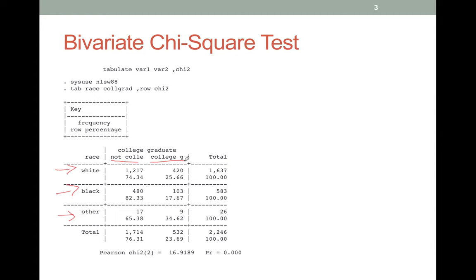What do you do to make this work? All you do is you make sure you have a comma chi2 at the end of your tab command, so it's not even a separate command, it's just an option on the tabulate command. Remember, tab is just short for tabulate.